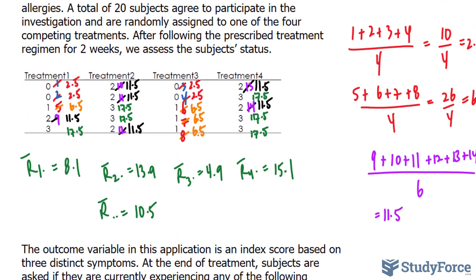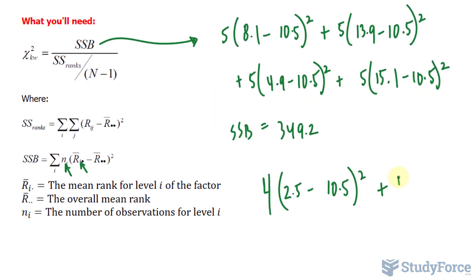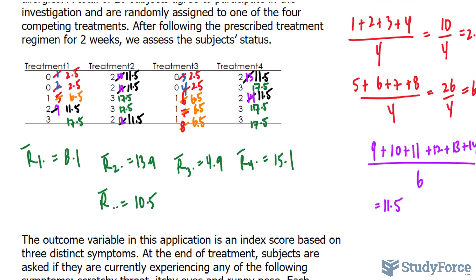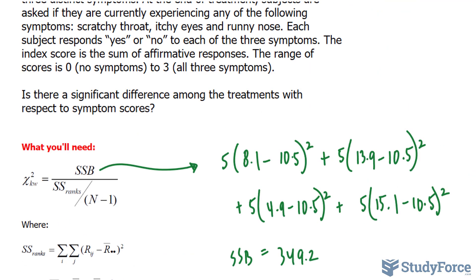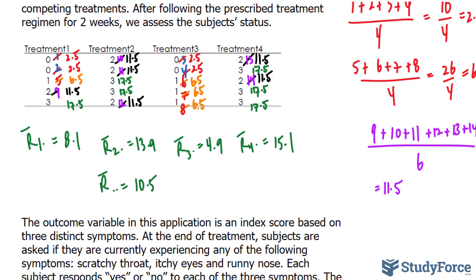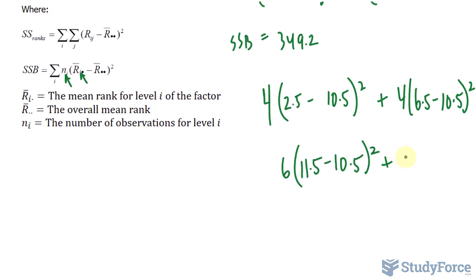Plus, the next rank was 6.5, and there were four of those as well. 6.5 minus 10.5, raised to the power of 2. The next rank was 11.5, and six of those existed. Plus, the last rank was 17.5, and there were six of those.